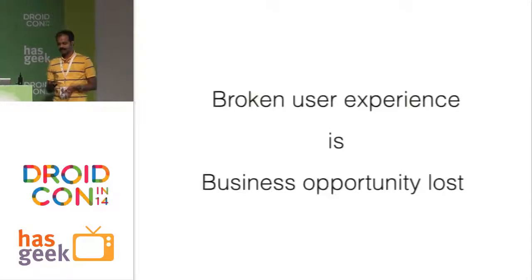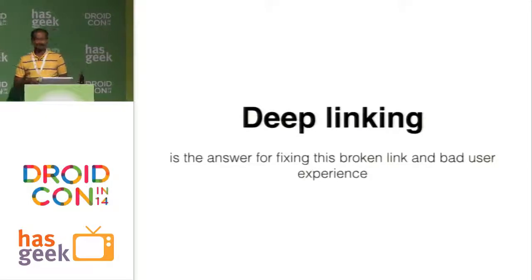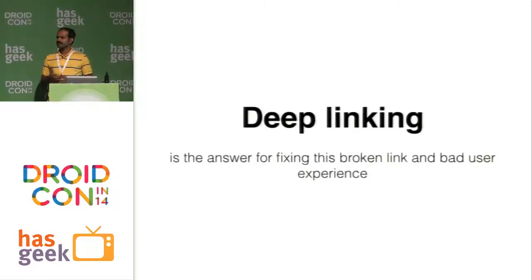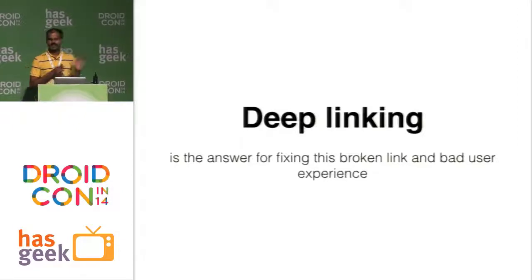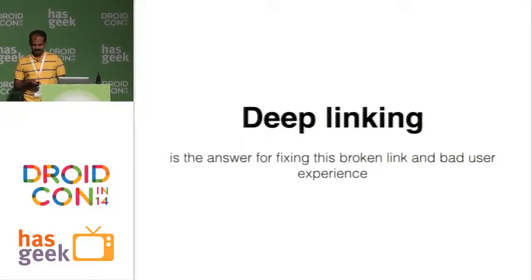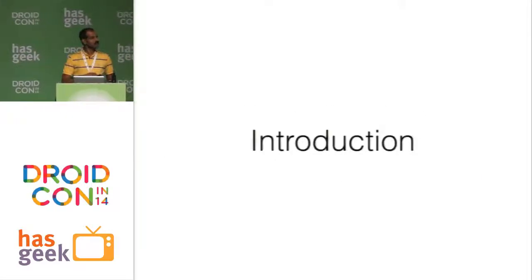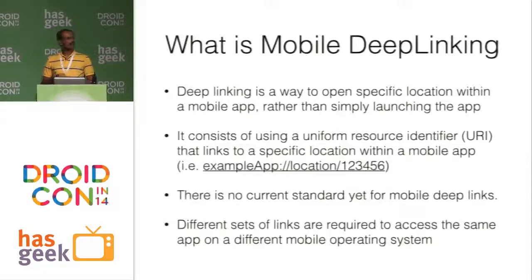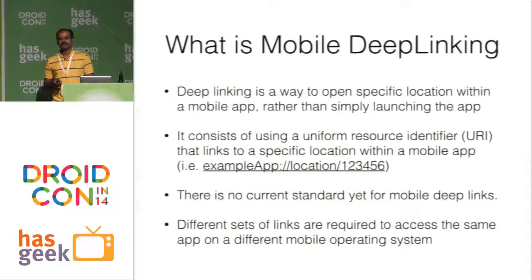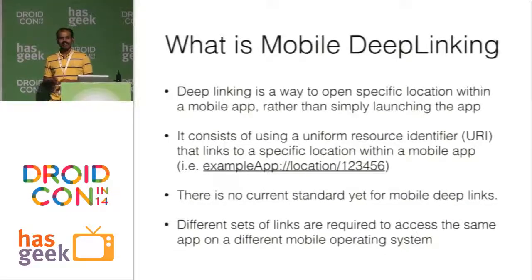That broken user experience obviously translates to a lot of potential business opportunity lost. That's where deep linking comes in — it is the bridge, the solution with which we can fix this broken link and enhance the user experience. Technically, deep linking is all about tagging or linking any specific location of an app, and how you do that is with a URI, just as we do with any web page.